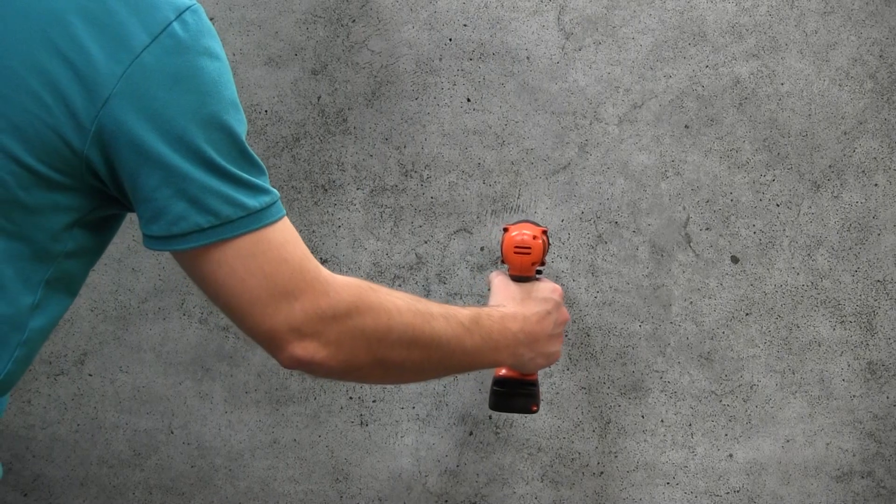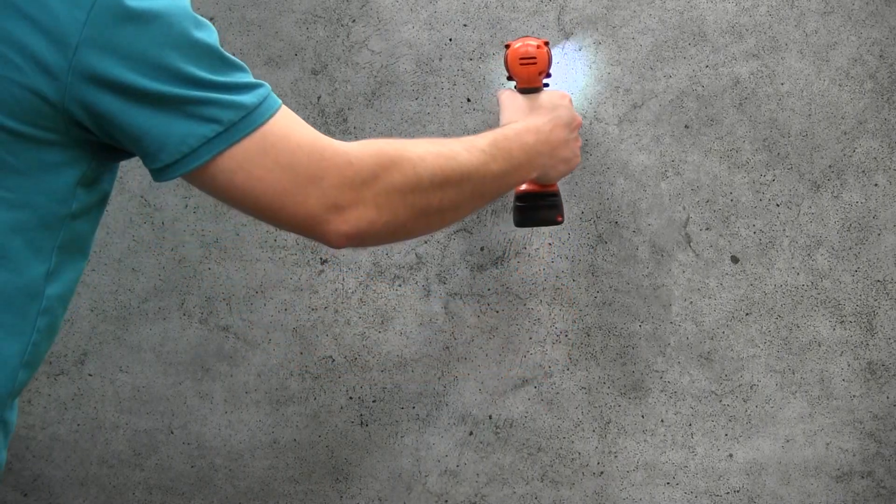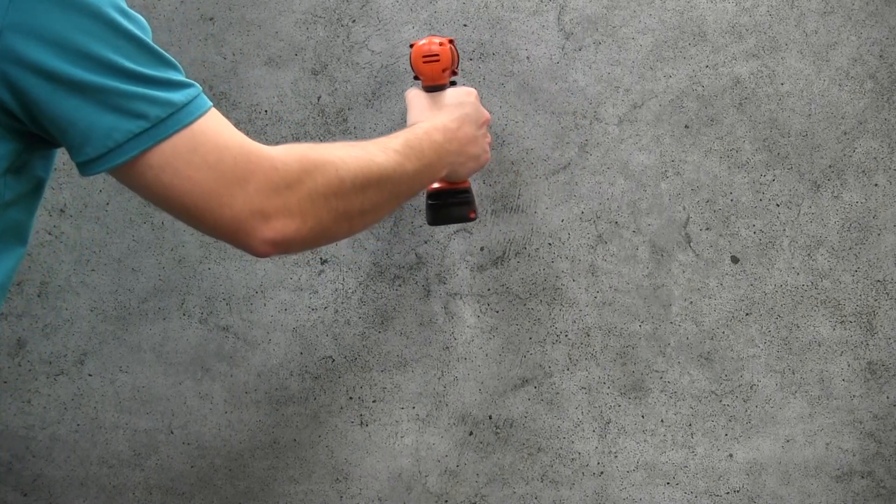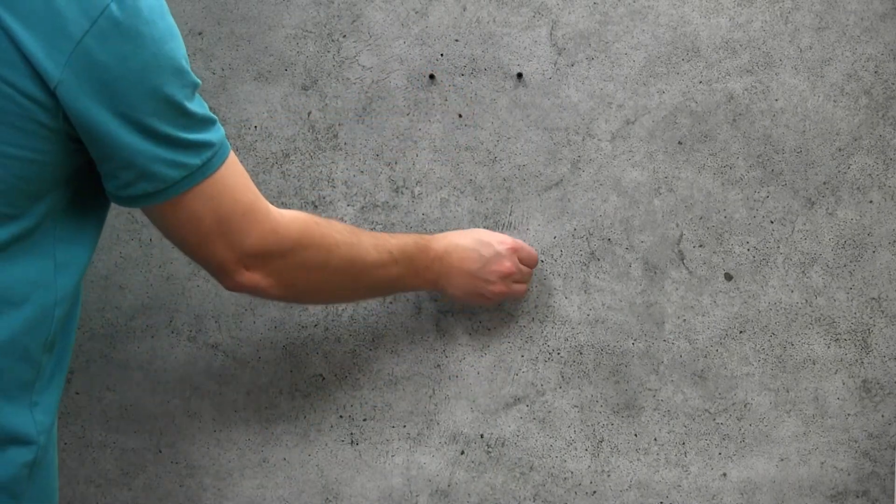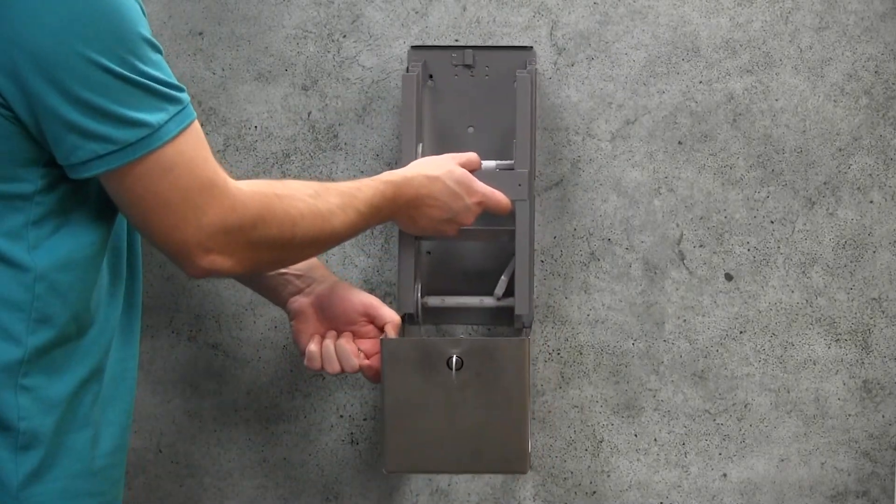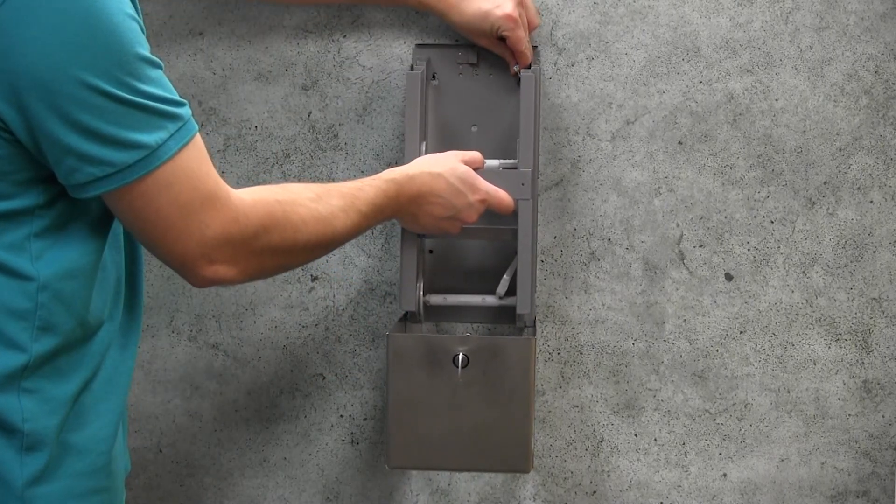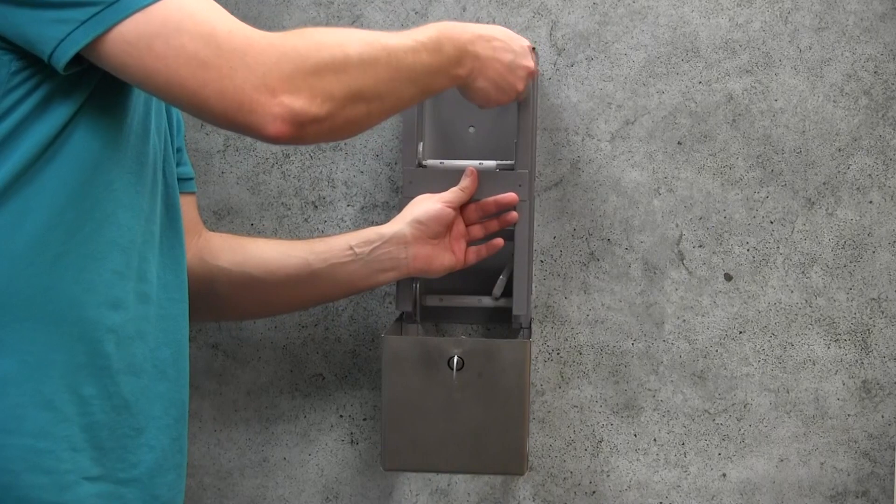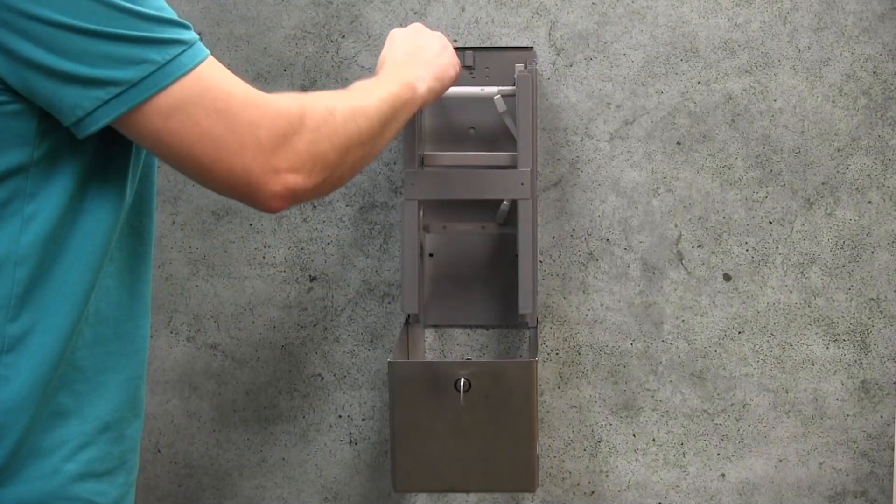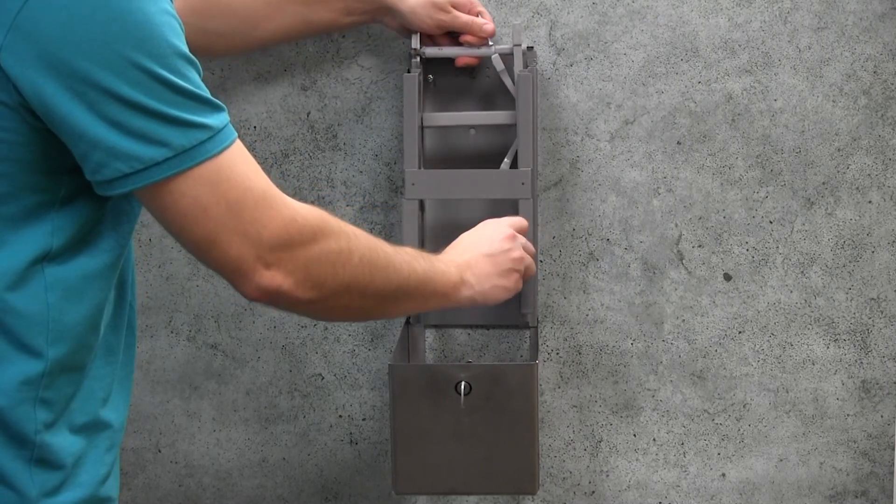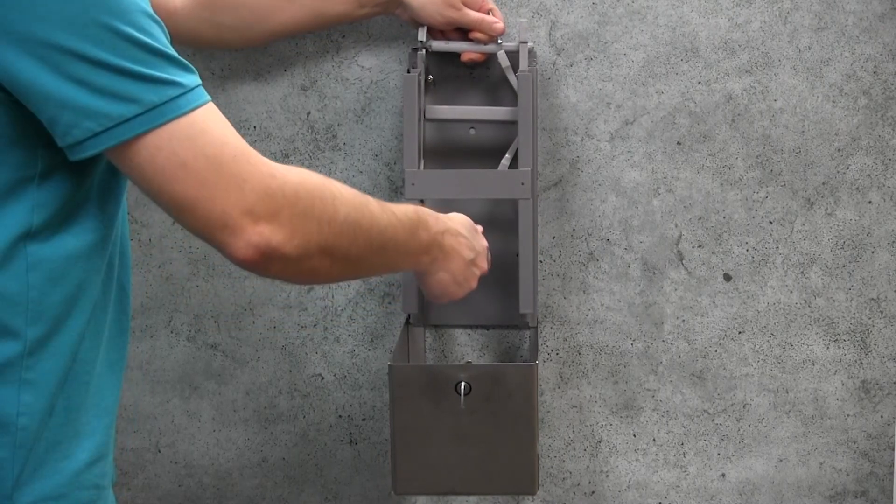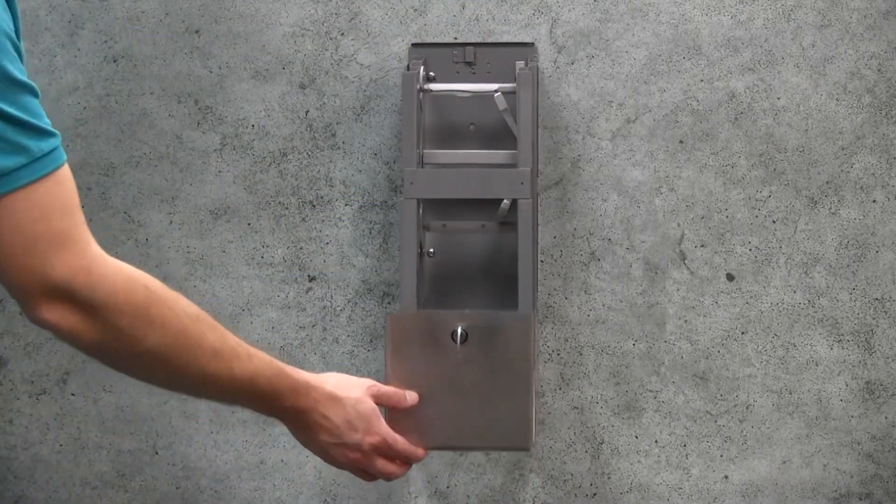Drill pilot holes if necessary and then mount the dispenser to the wall with the four screws and wall anchors if necessary. Close the dispenser.